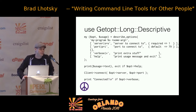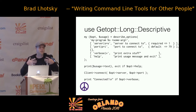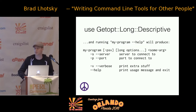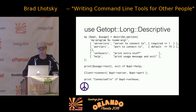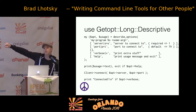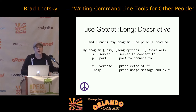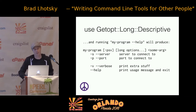Use Getopt::Long::Descriptive if you can. It lets you document your options as you're writing your code. It also supports the ability to validate those parameters, and then it gives you the usage text that you can then output. Running that will generate something like this. One of the nice things is that it can read the optional delegation — so here I have 'server' or 's', and when I see the output, it shows me the short option is dash s. This is actually directly from the man page of Getopt::Long::Descriptive. Because they have good documentation, I could just copy and paste it.